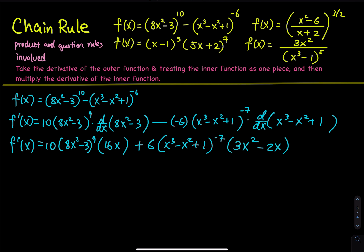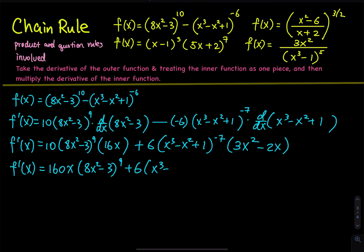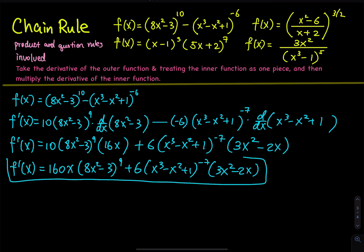For the first piece, you can multiply the 10 and the 16, so your answer looks one step cleaner. That is 160x, times 8x squared minus 3, raised to the 9th power. And then plus 6, and then the third power raised to the negative 7, and then 3x squared minus 2x. And then I will box this as my final answer.